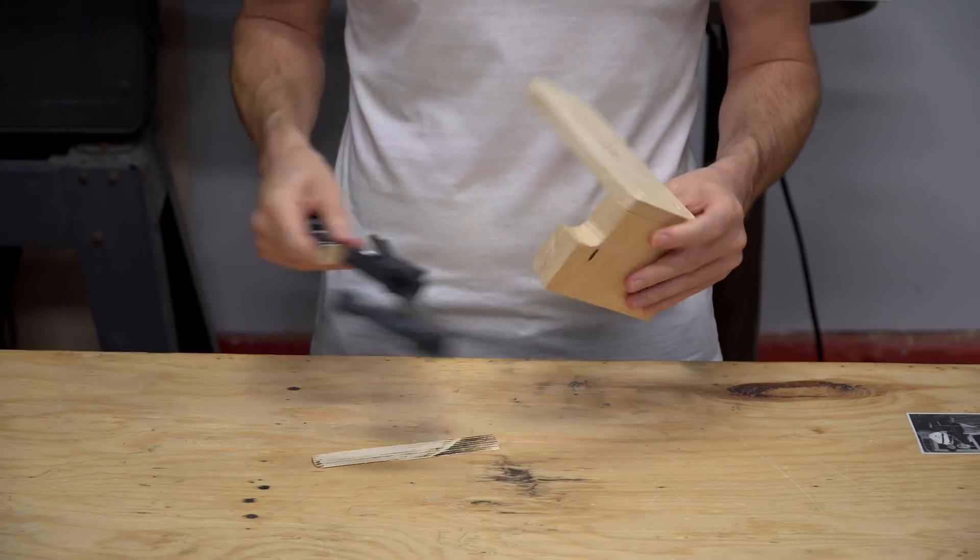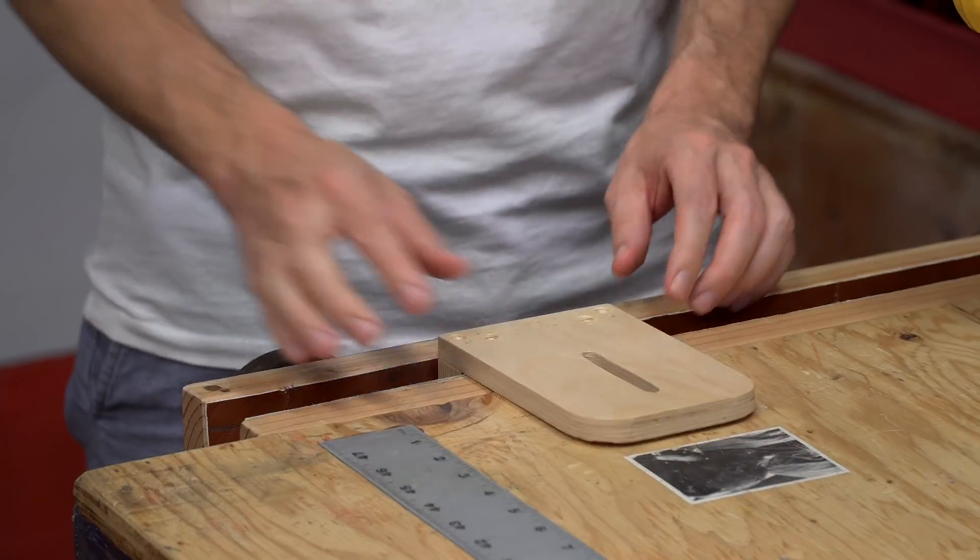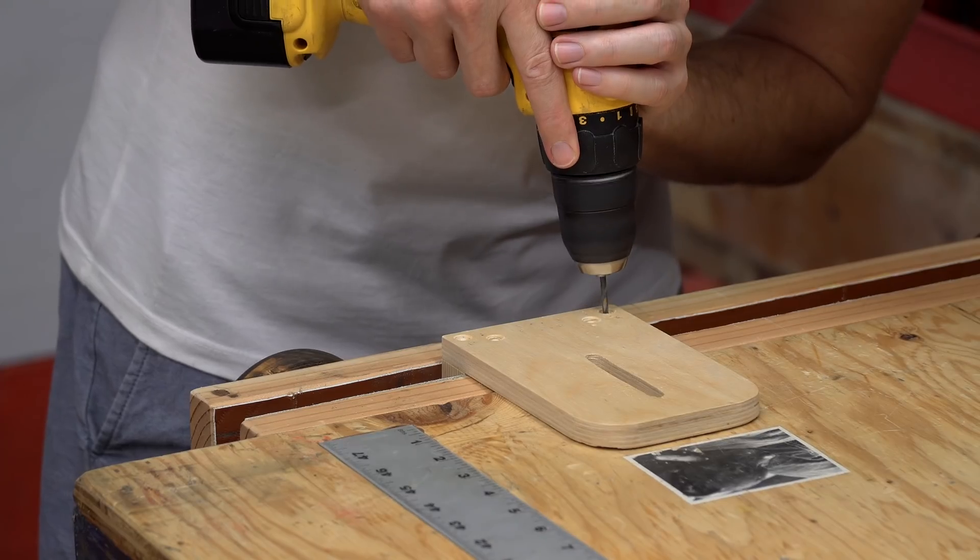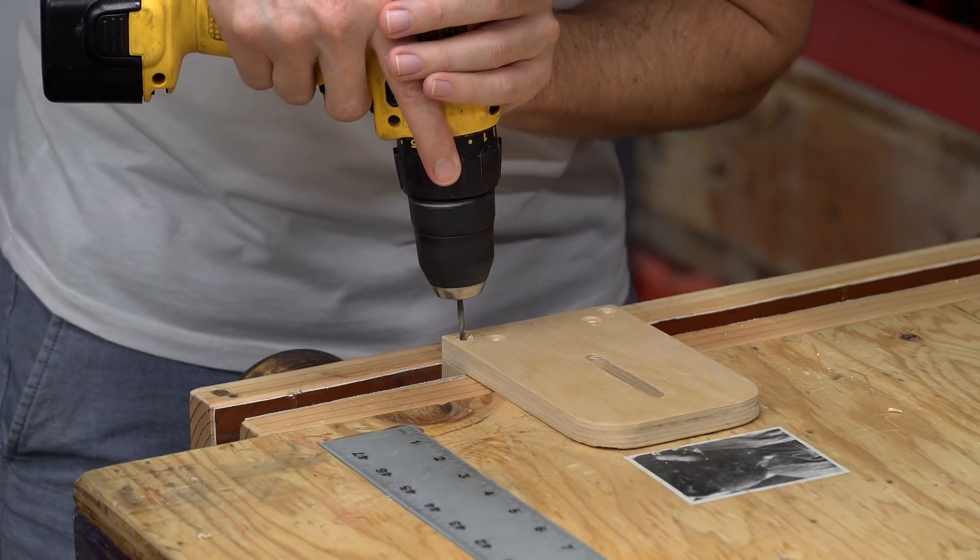Once the glue for the two pieces of the tool rest had dried, I used a drill to extend the depth of the old pilot holes, and then added the screws back into the assembly.